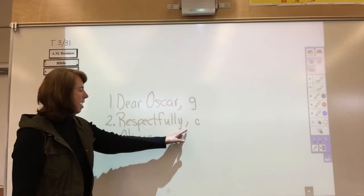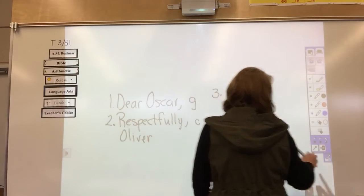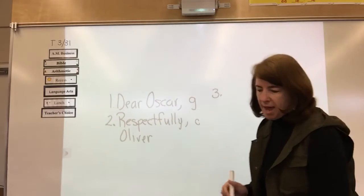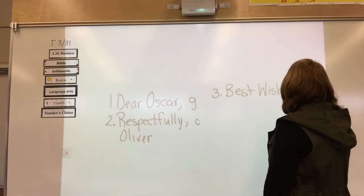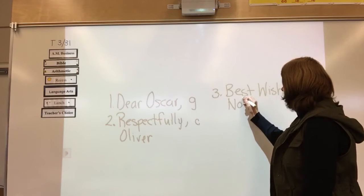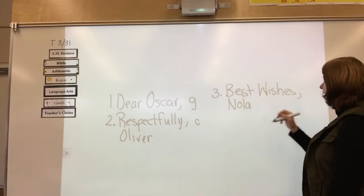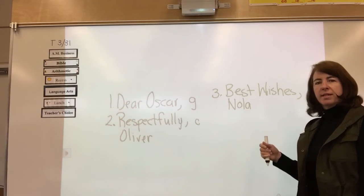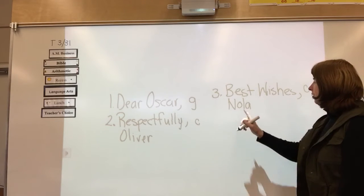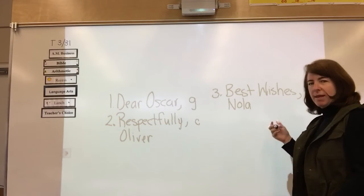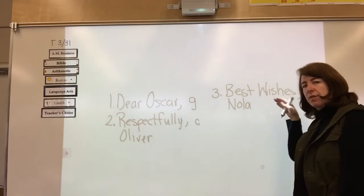All right. Then we want to take a look at number three. Number three says, best wishes, and then you have your comma, and then we have the person's name underneath. That's a hint. Nola. So capital B, capital W. Okay. Best wishes, comma, Nola. Is this a greeting or is this a closing? If you said closing, you are correct. One clue is that the words best wishes, that sounds like we're ending something, and then Nola's underneath it, so your name goes underneath the closing there. Good.